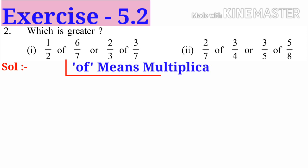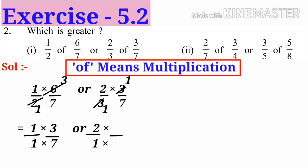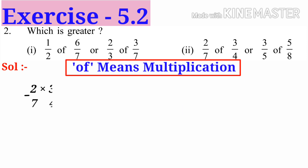Now second problem: which is greater? Here 'half' means multiplication, so put '×' in place of 'half'. That is 1/2 × 6/7 or 2/3 × 3/7. On simplification: left side divide by 2 gives 1 and 3; right side divide by 3 gives 1 and 1. We get 1×3 / 1×7 or 2×1 / 1×7, that is 3/7 or 2/7. Since the denominator is the same, the higher numerator gives the greater fraction, so 1/2 of 6/7 is greater.